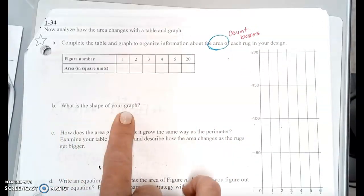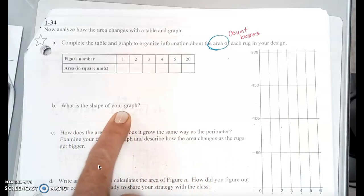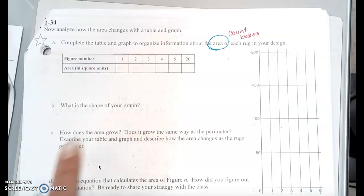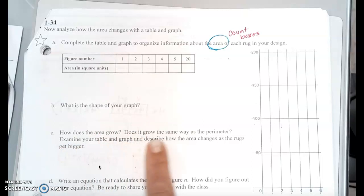And then it asks, what is the shape of your graph? What does the shape of your graph look like? Is it a straight line? Is it curved? Is it a circle? How does the area grow? Does it grow the same way as the perimeter? Or does it grow faster, slower? You describe it. Examine your table and graph and describe how the area changes as the rug gets bigger.